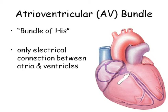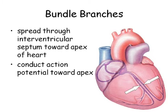From the AV node, the signal goes through the bundle of His, or the AV bundle — the only electrical connection between the atrium and the ventricle. Once the signal gets through the bundle of His, it quickly travels down the interventricular septum, then slows slightly before rapidly propagating down the bundle branches and up the ventricles.